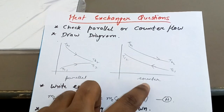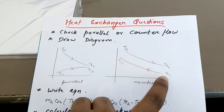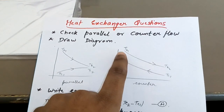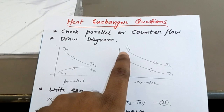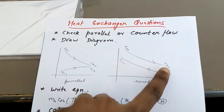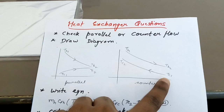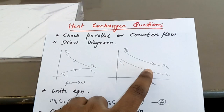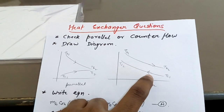For counter flow, both fluids flow in opposite directions, so the arrows on the diagram are opposite to each other.